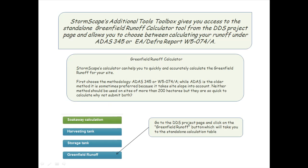StormScape's additional tools toolbox gives you access to the standalone Greenfield Runoff calculator tool from the DDS project page, and allows you to choose between calculating your runoff under ADAS 345 or EA DEFRA report W5074A. StormScape's calculator can help you to quickly and accurately calculate the Greenfield runoff for your site.